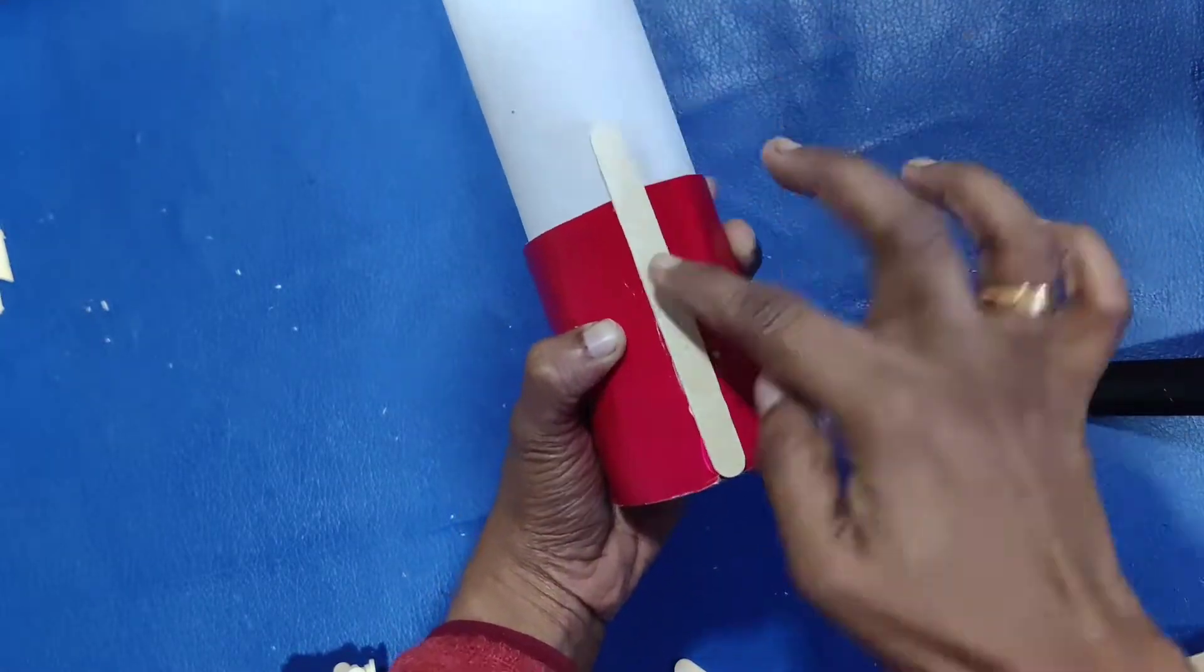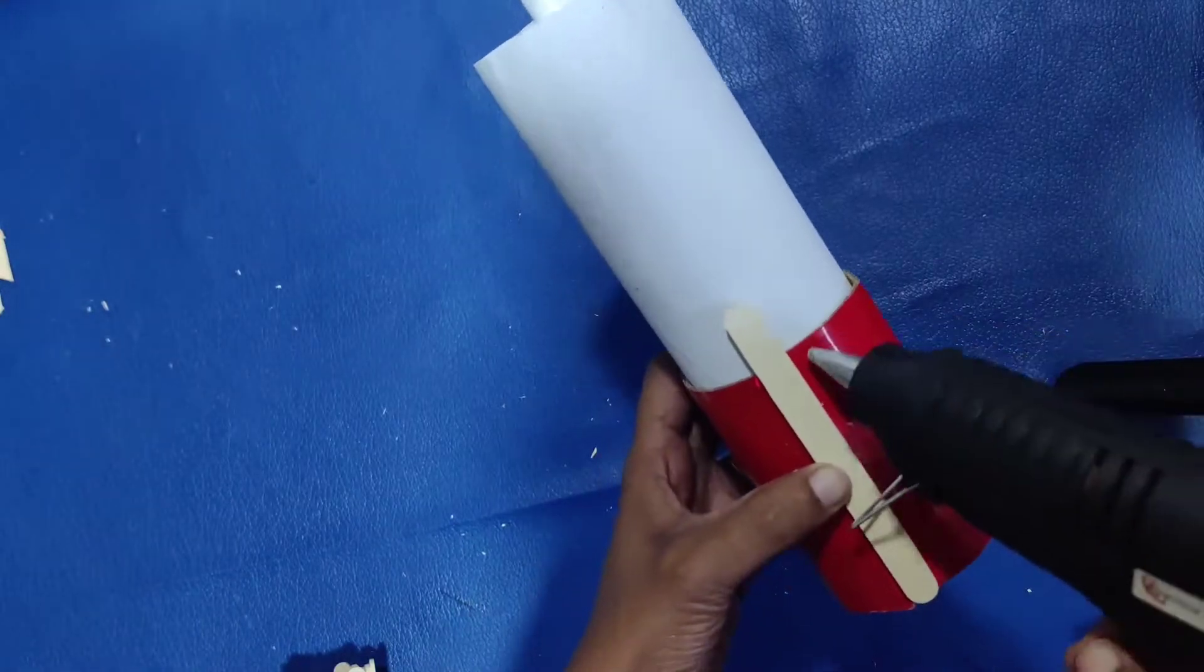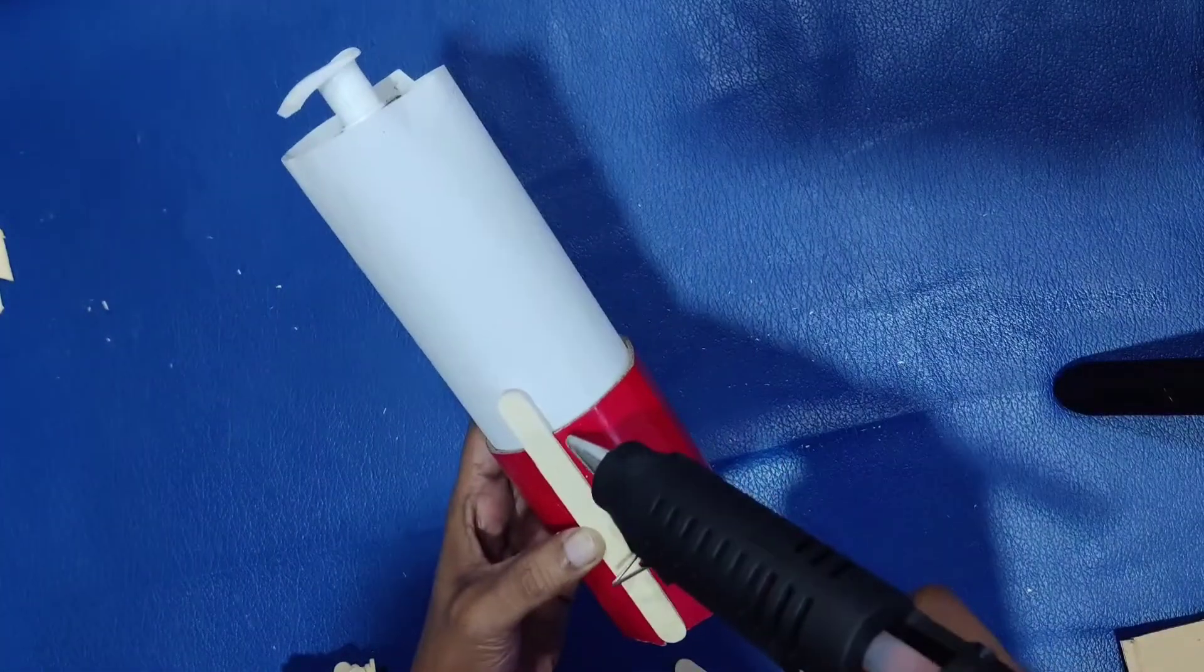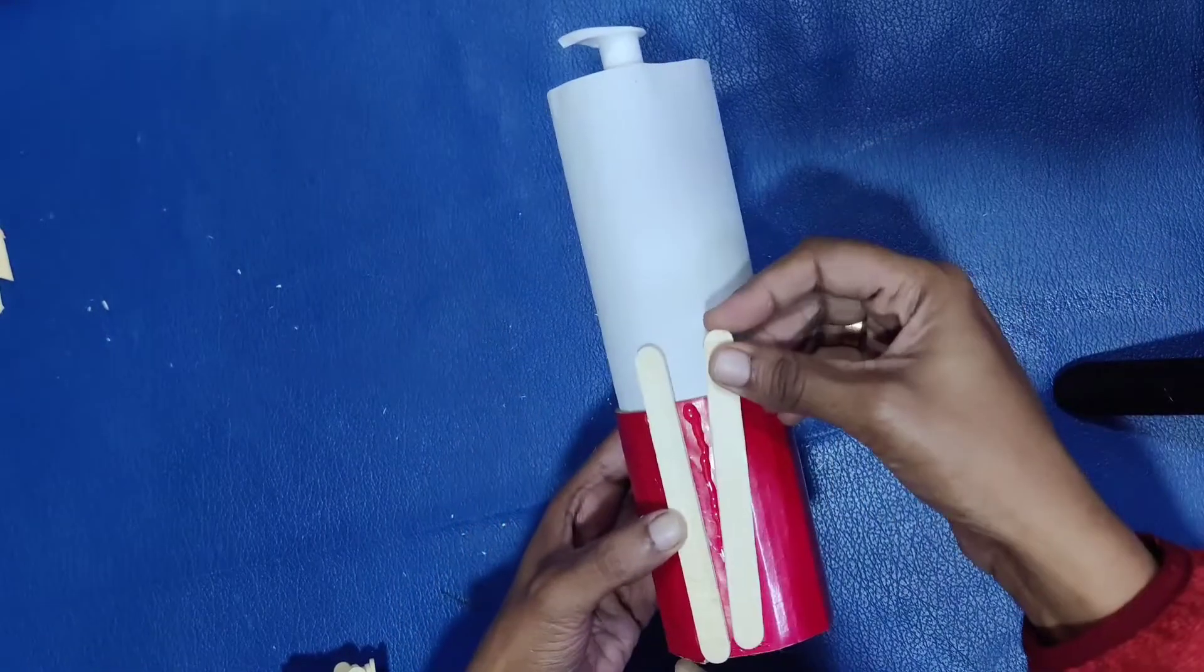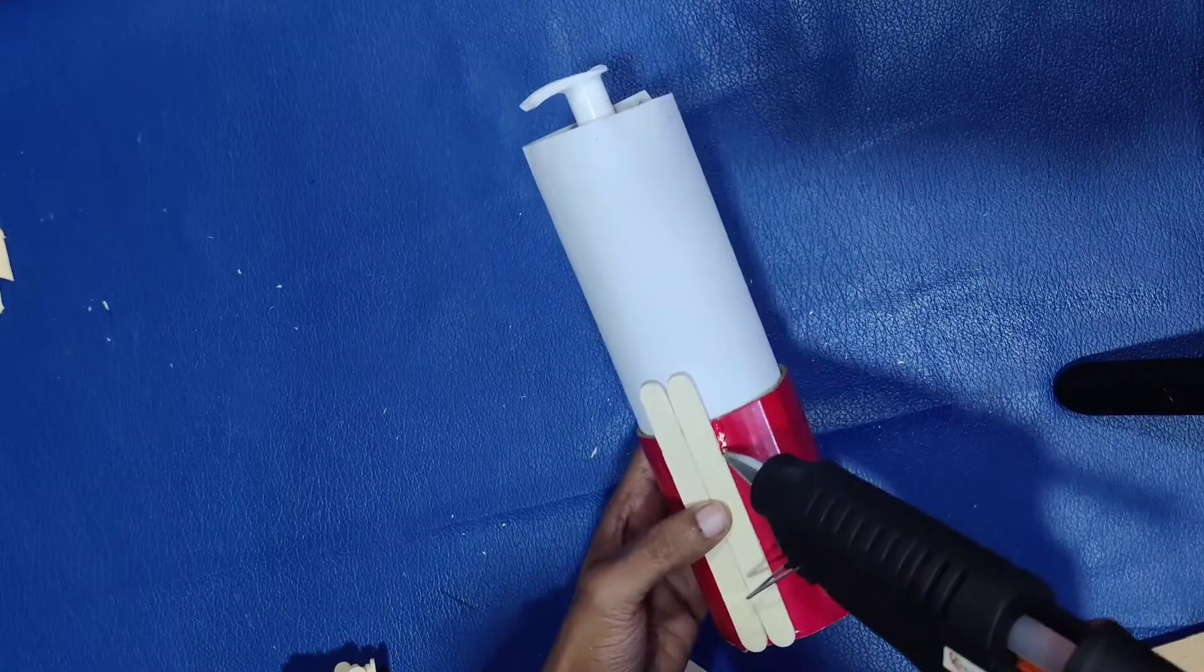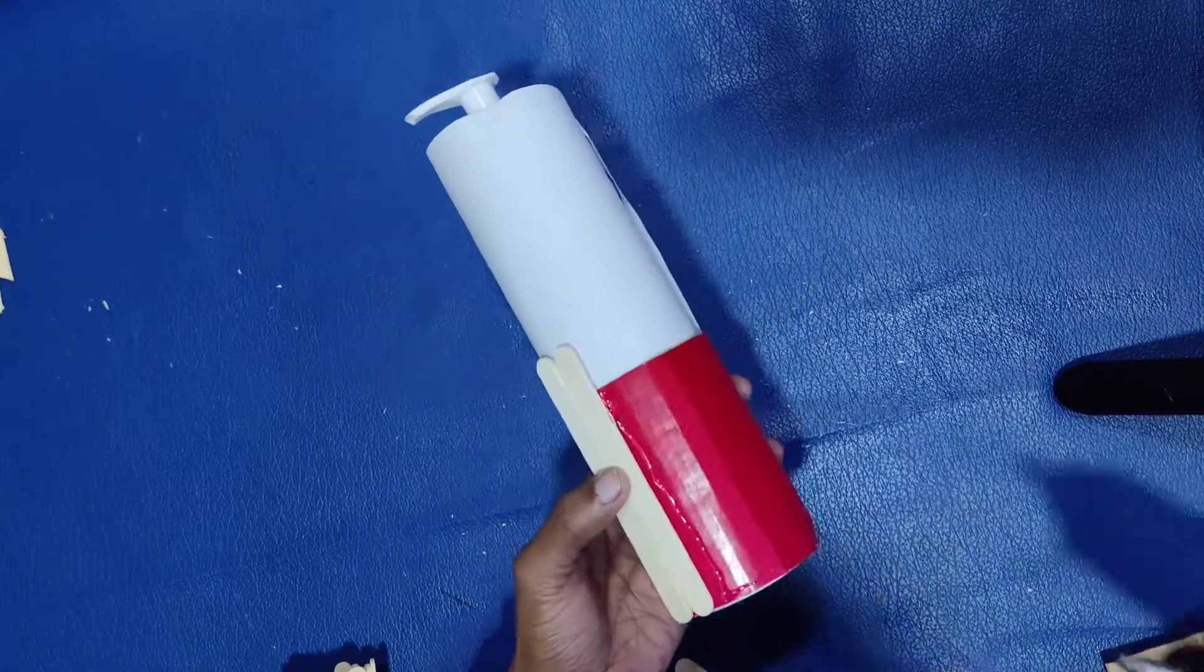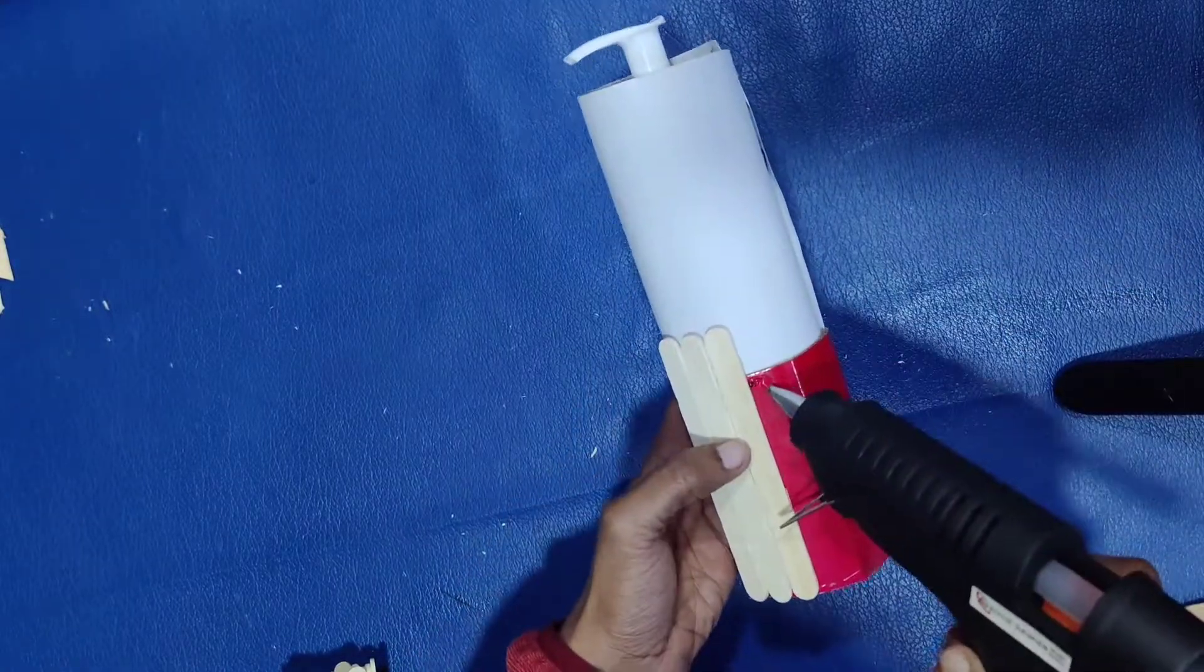The last move is to put the ice cream sticks to the top. This is a very easy glue gun. We are very happy to do this and use the glue gun.